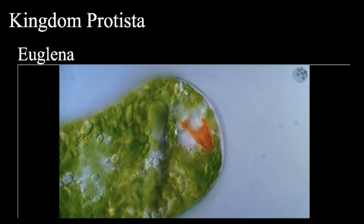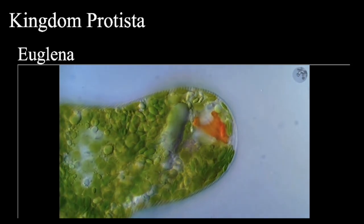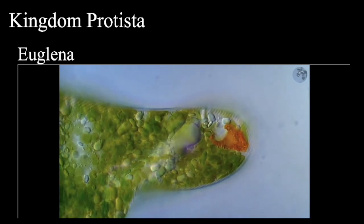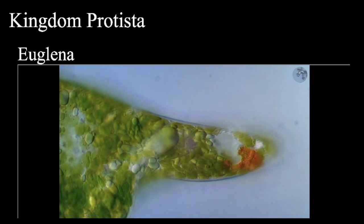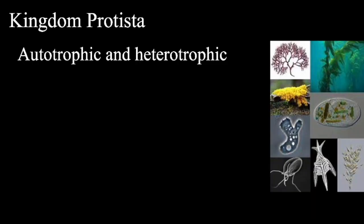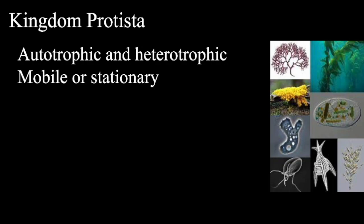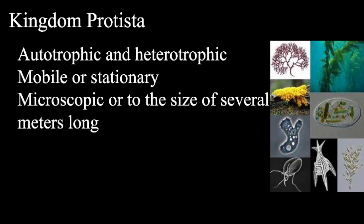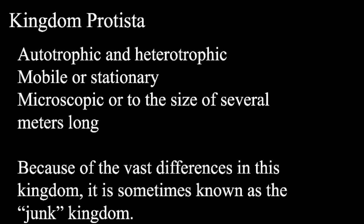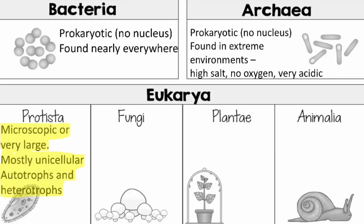Unlike plant cells, euglena lack a rigid cellulose wall and have a flexible pellicle that allows them to change shape. Though they are photosynthetic, most species can also feed heterotrophically and absorb food directly through the cell surface. So Kingdom Protista is either autotrophic or heterotrophic, mobile or stationary. Protists could be microscopic or several meters long, like the kelp found in kelp forests deep in the ocean. Because of the vast differences in this kingdom, it is sometimes known as the junk kingdom.